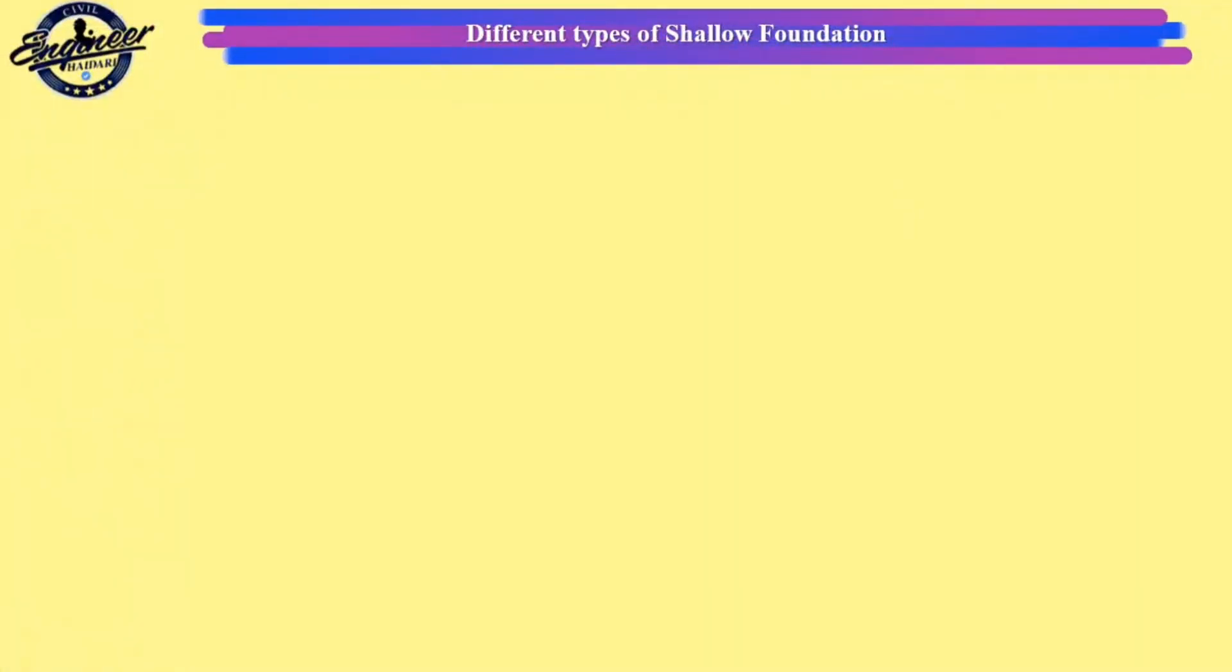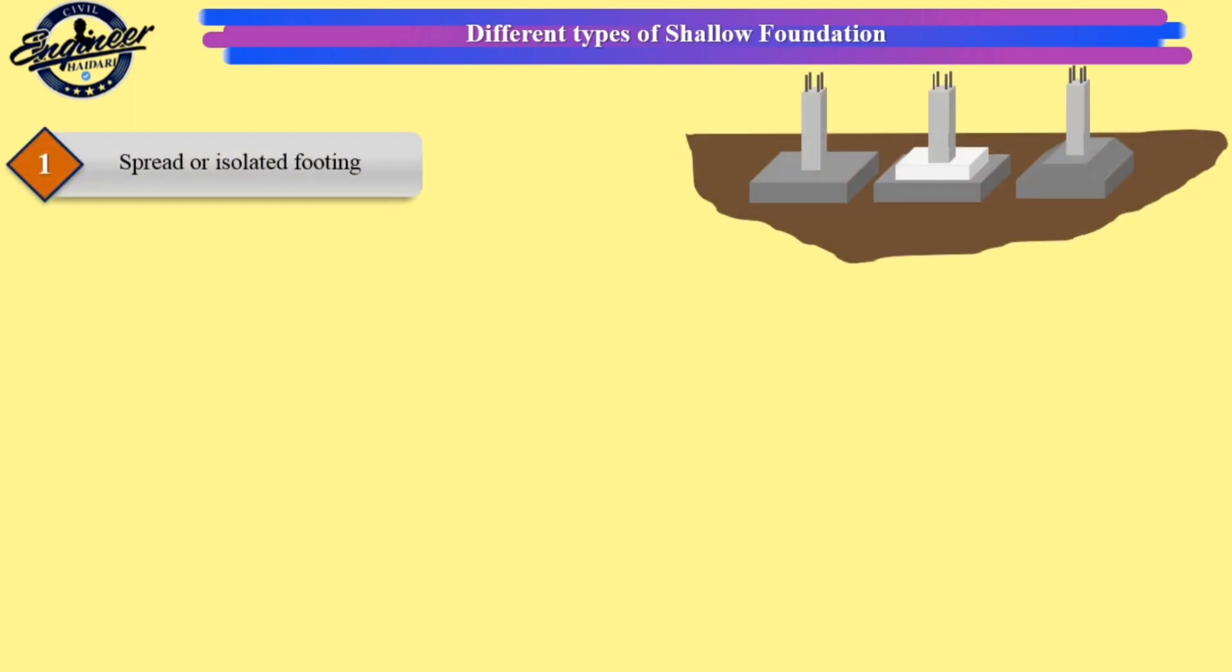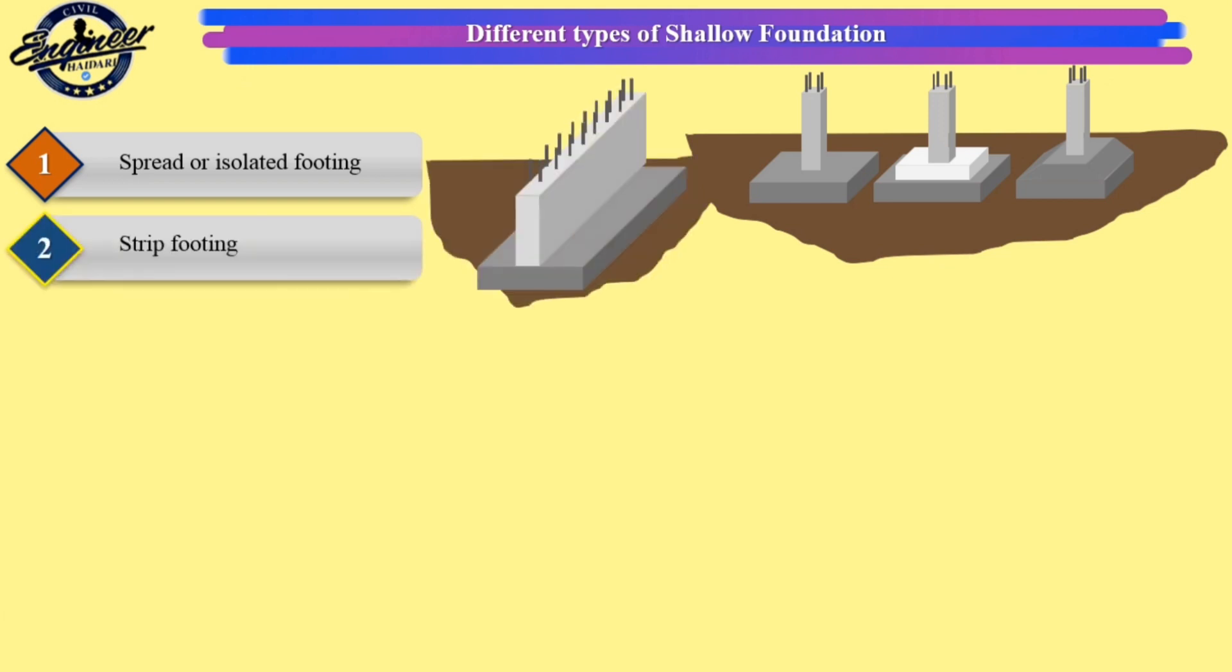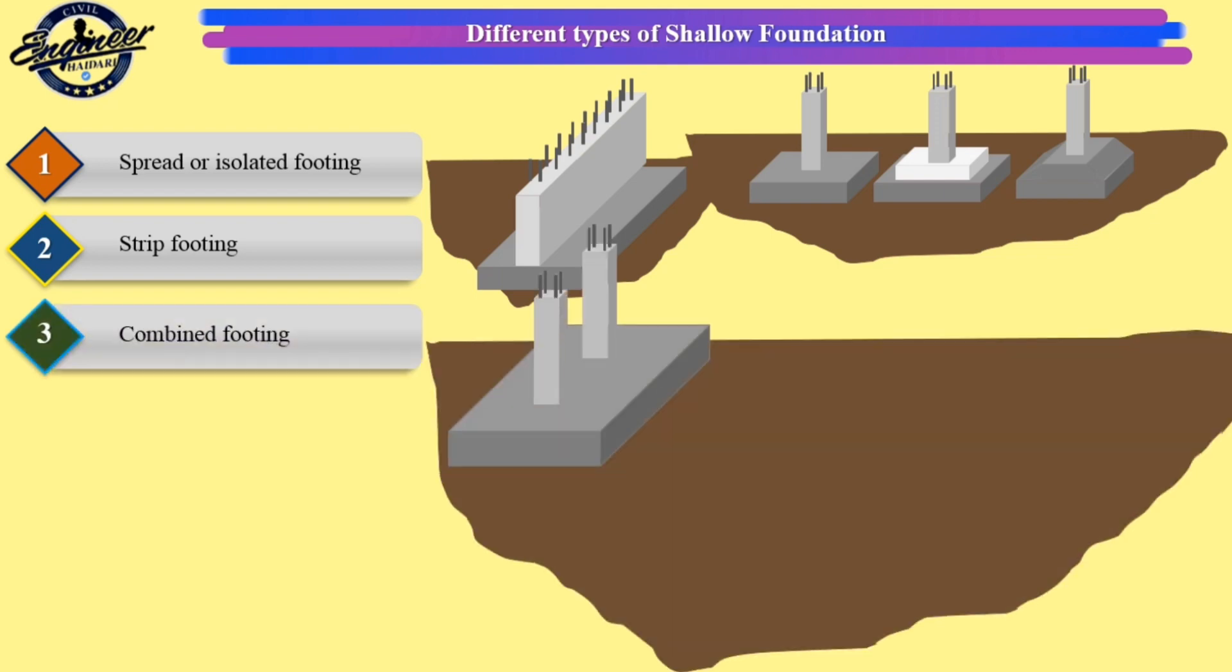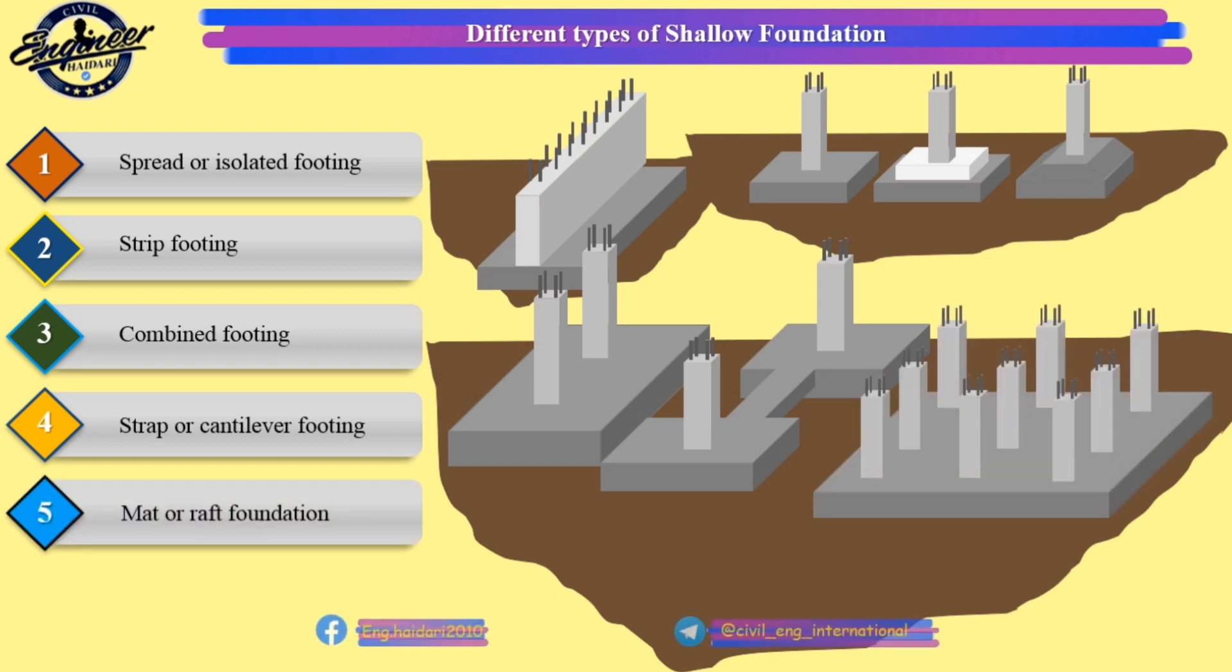Different types of shallow foundation: 1. Spread or isolated footing, 2. Strip footing, 3. Combined footing, 4. Strap or cantilever footing, 5. Mat or raft foundation.